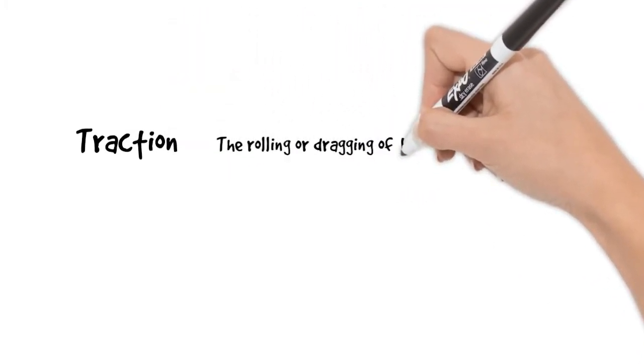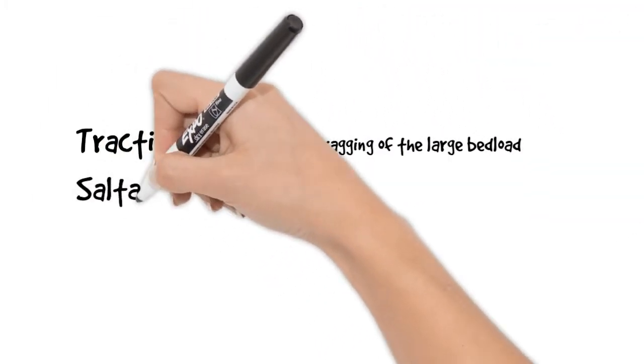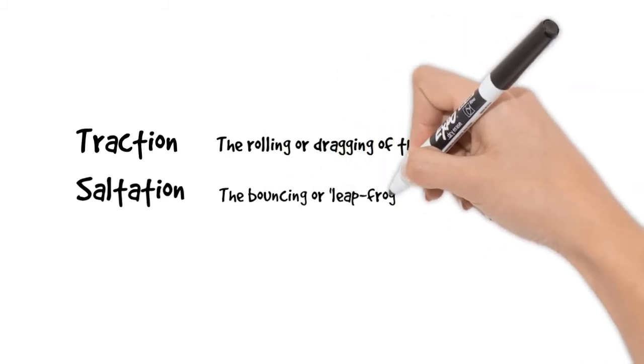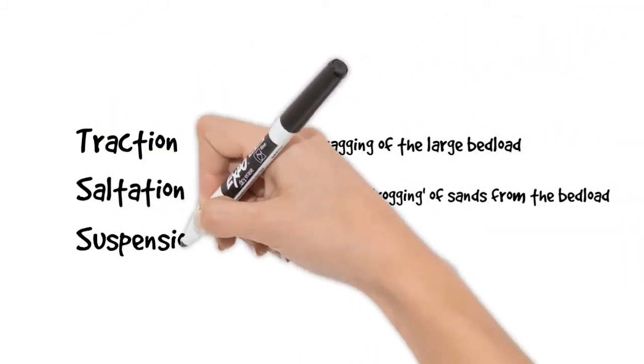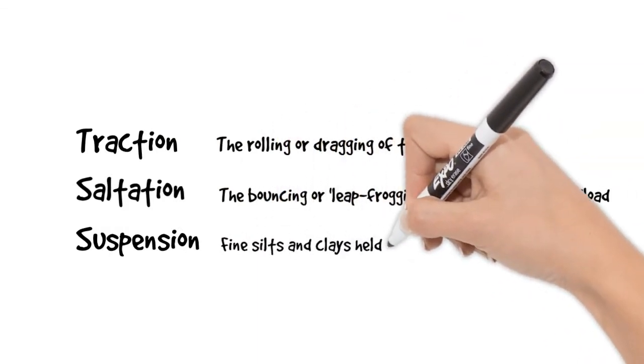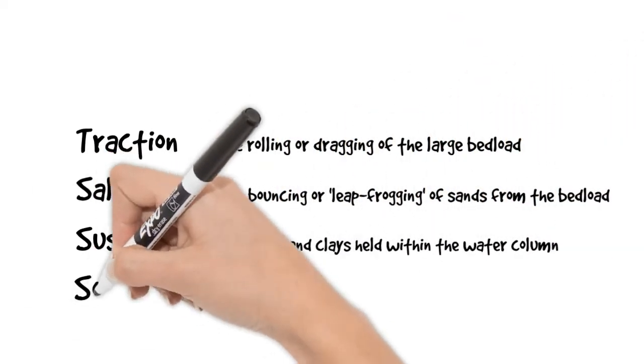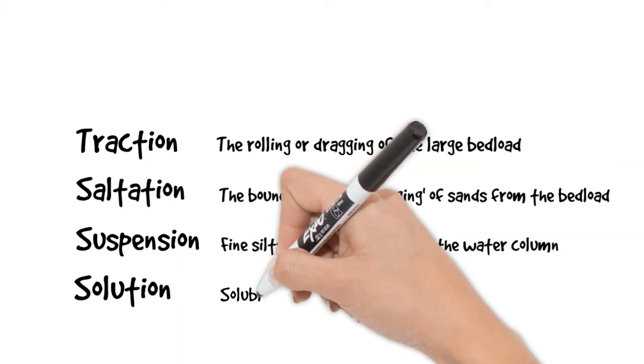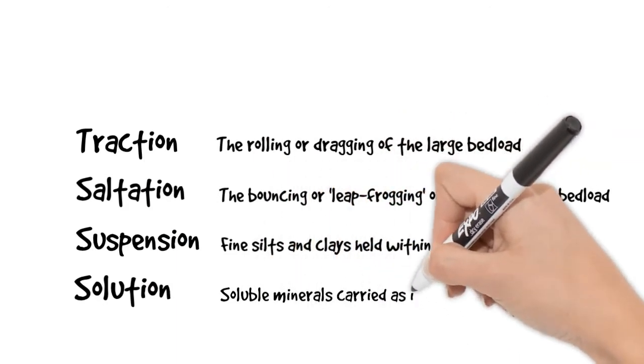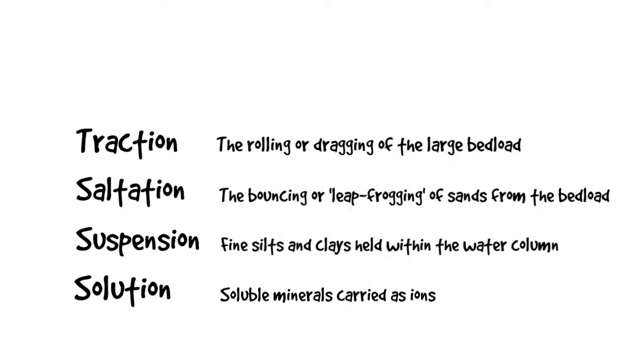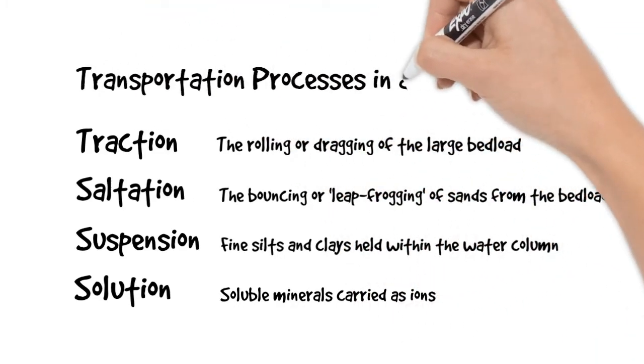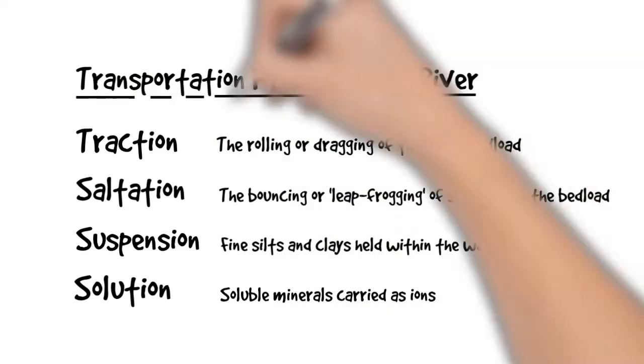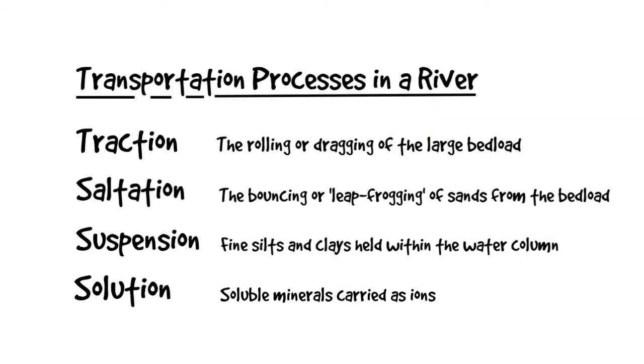There are four processes of transportation in rivers. Traction which is the rolling and dragging, saltation the bouncing or leapfrogging, suspension is the finest silts and clays held in the water column and then finally solution is where soluble materials are dissolved into ions. You can't see those in the water. So there are our transportation processes in the river.